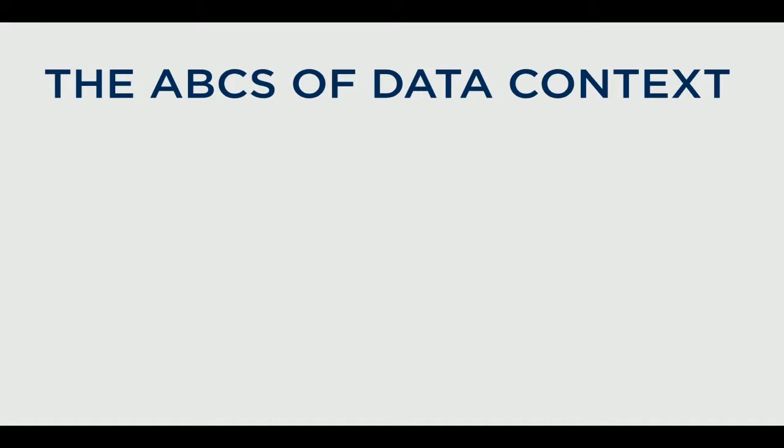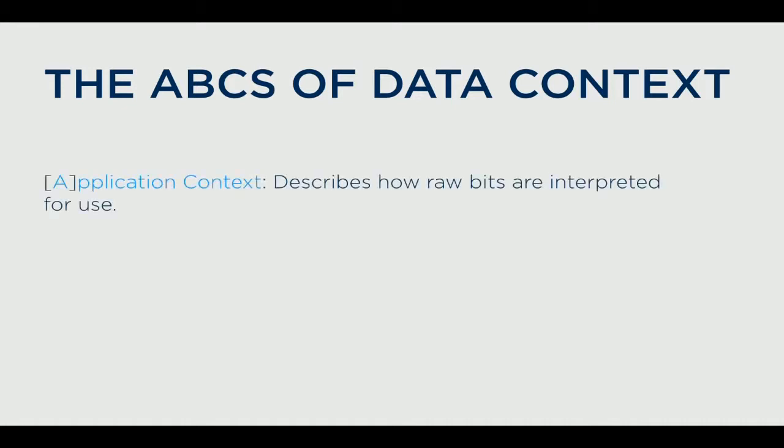We have three different kinds of data context — we call them the ABCs of data context. The first is application context, which describes how raw bits are interpreted for use in an application. This encompasses what you might traditionally think of as metadata: models like statistical or semantic models, code, and actual applications. A simple example might be database schemas; a more complicated example might be capturing the data and code that combine to train a machine learning model and the model that makes predictions.